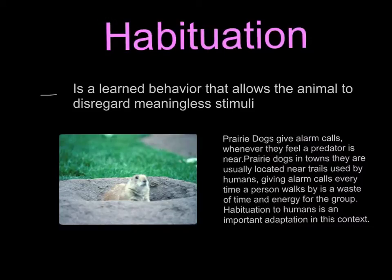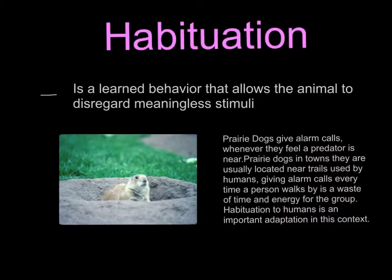Habituation is a learned behavior that allows an animal to disregard meaningless stimuli. For example, prairie dogs give alarm calls whenever they feel a predator is near — that's kind of like their warning sign. Prairie dogs in towns located near trails used by humans give alarm calls every time a person walks by, which is a waste of time and energy for the group. Habituation to humans is an important adaptation in this context — the prairie dogs got used to the humans because they know they're not going to hurt them. So why even do the alarm call if there's no purpose to it? This situation is an example of habituation.